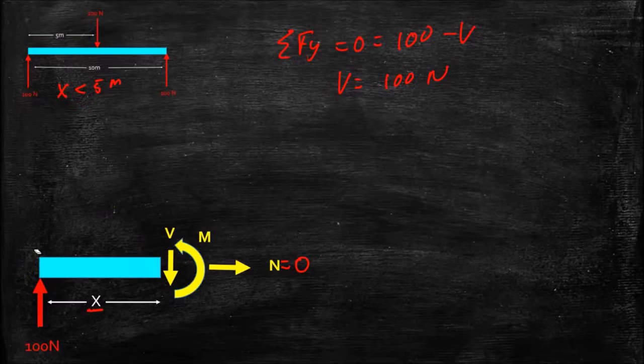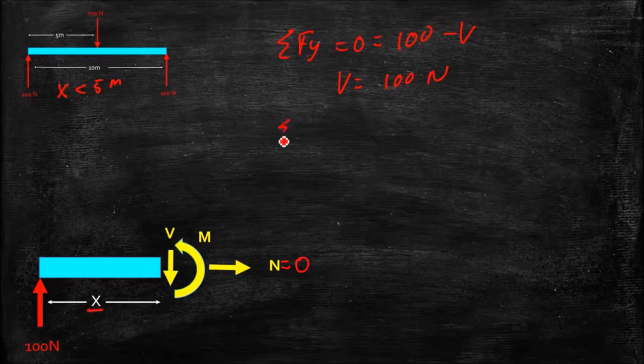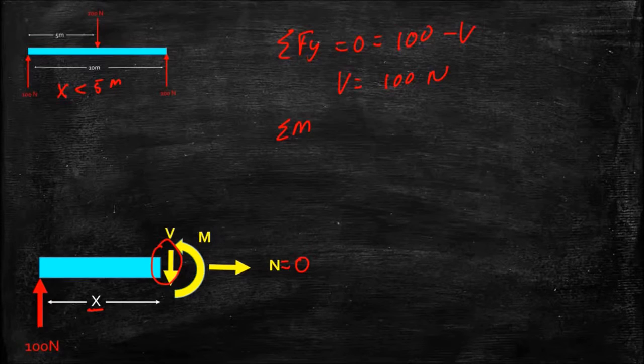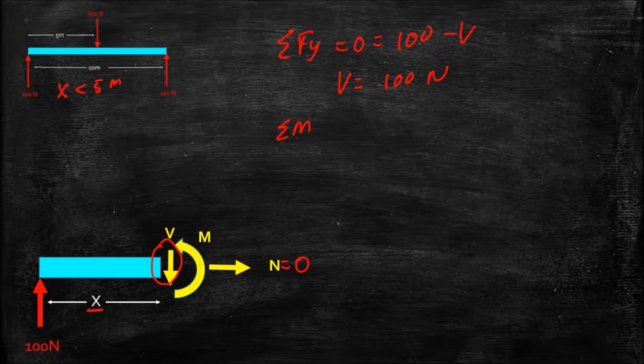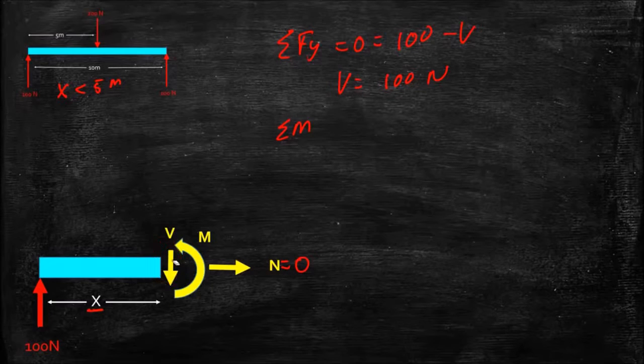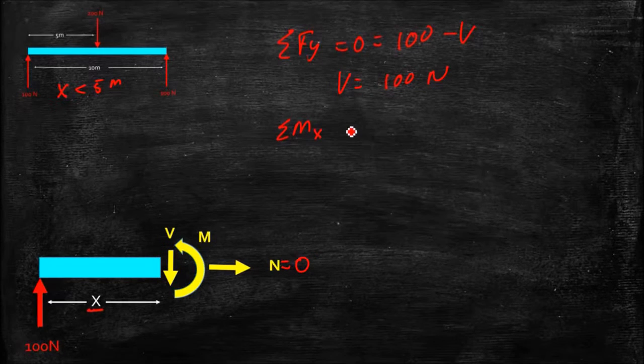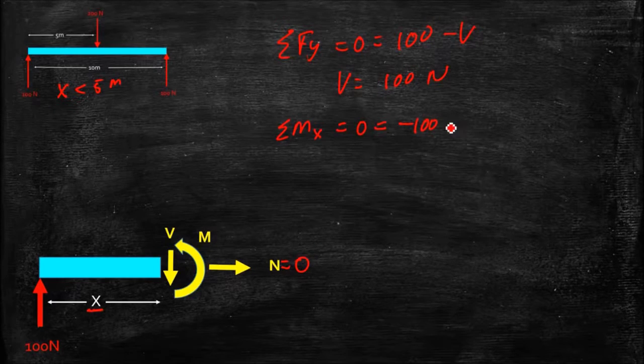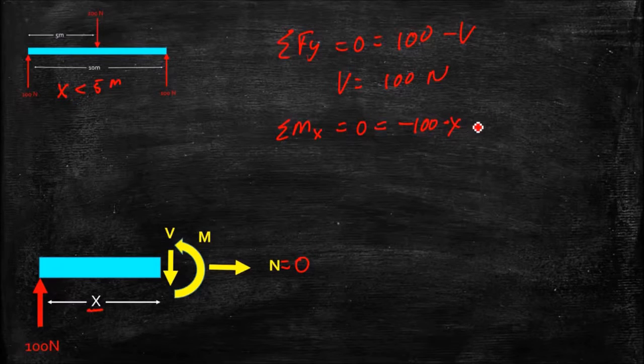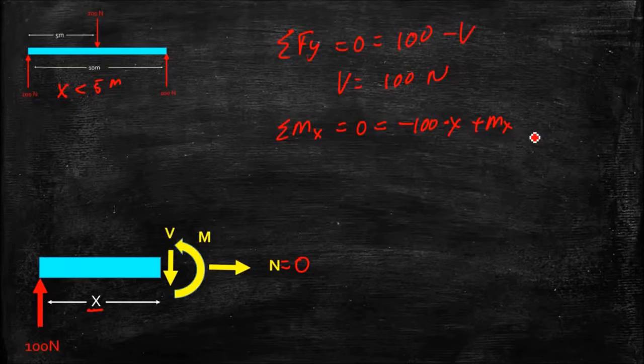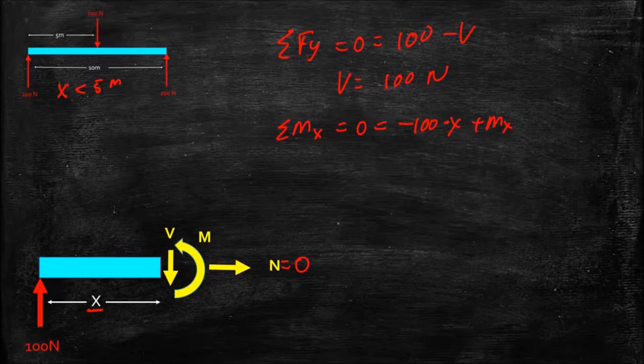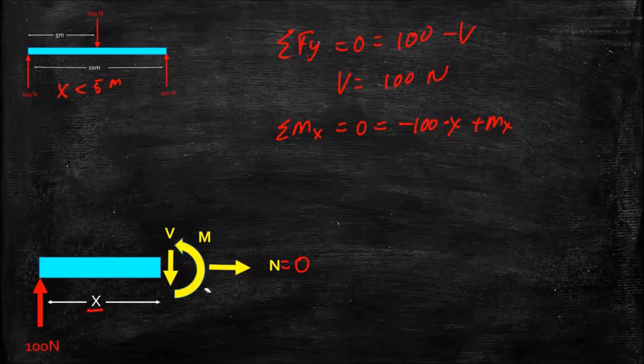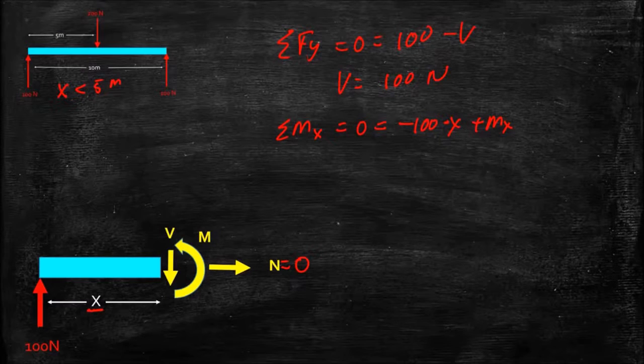Now, if we consider our moment, sum of the moments, and we'll take the moments at our section here, so we don't have to worry about what the shear force is. We can only work with the known reaction force, and we solve directly for the moment at that section. So the sum of the moments at our section x equals zero, and that's equal to minus 100 times the distance x plus that moment at x, and we know that we've drawn a positive moment here and that the moment on the other end has to be negative to be equal and opposite for this to be in equilibrium.